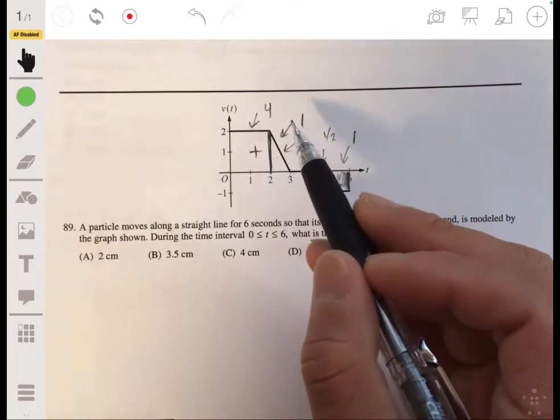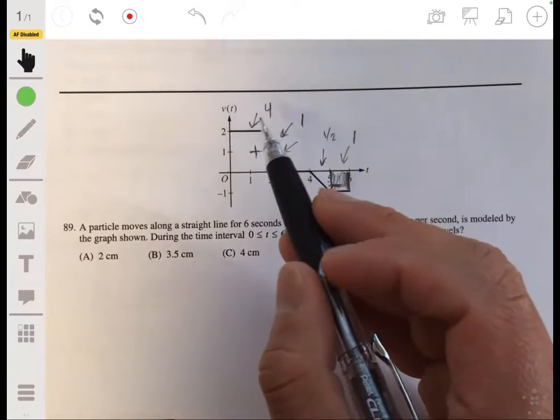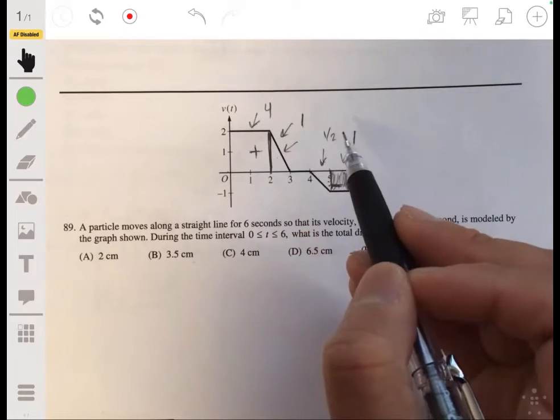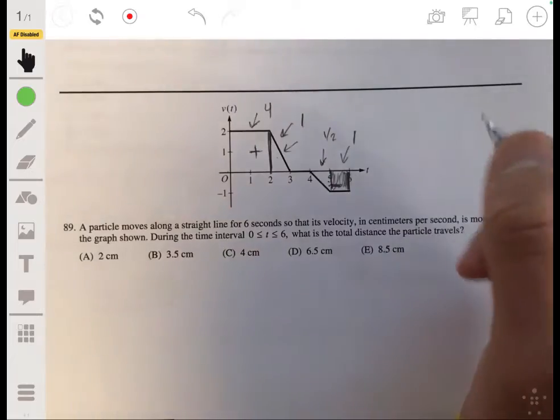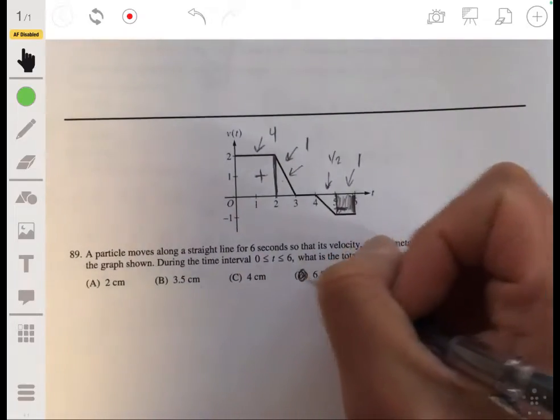And this is another, this is just a square. So one. So just add all these up, treat them all as positive values. Four, five, five and a half, six and a half. And so the answer would be six and a half centimeters.